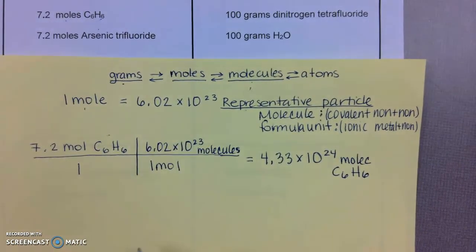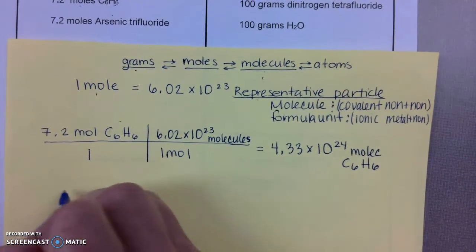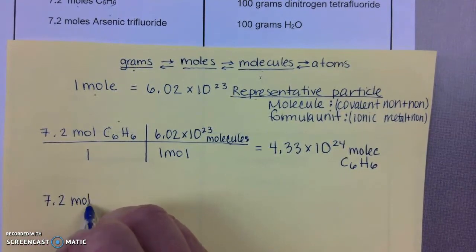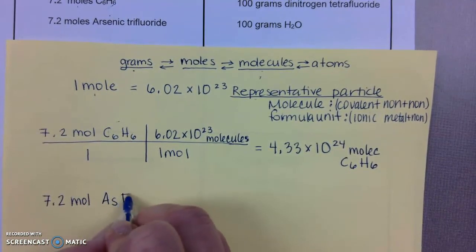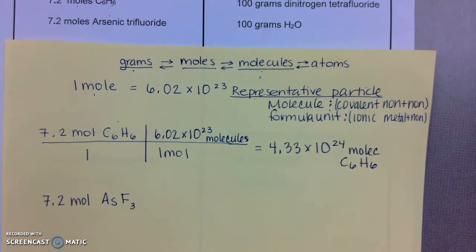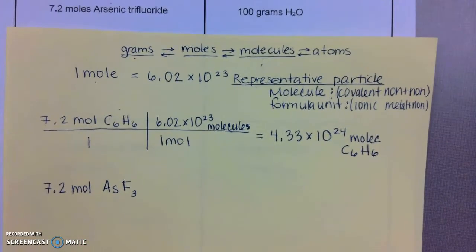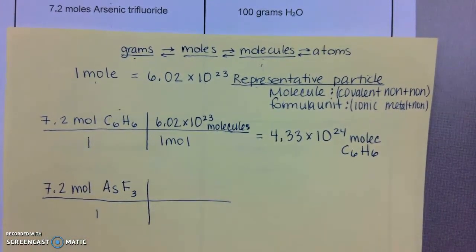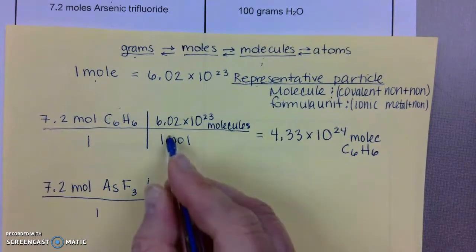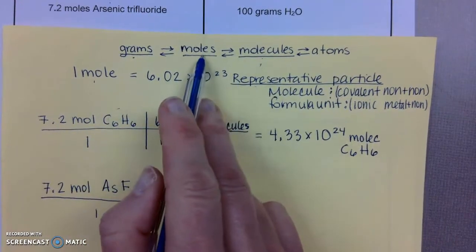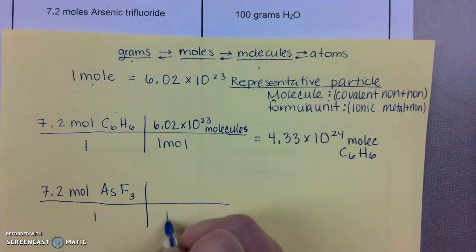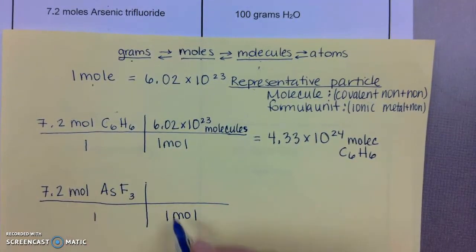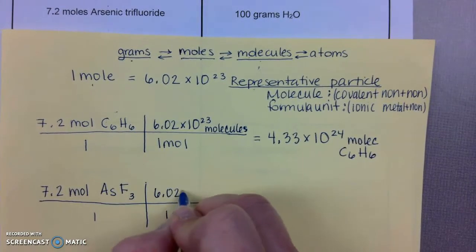Let's do the second problem in this equation here. It's 7.2 moles of arsenic trifluoride. Writing the formula correctly, make that T-chart, place it over 1. I have this value. I'm going from moles to molecules, so I'm going to place the mole on the bottom so I can cancel out moles. I'll place molecule on top.